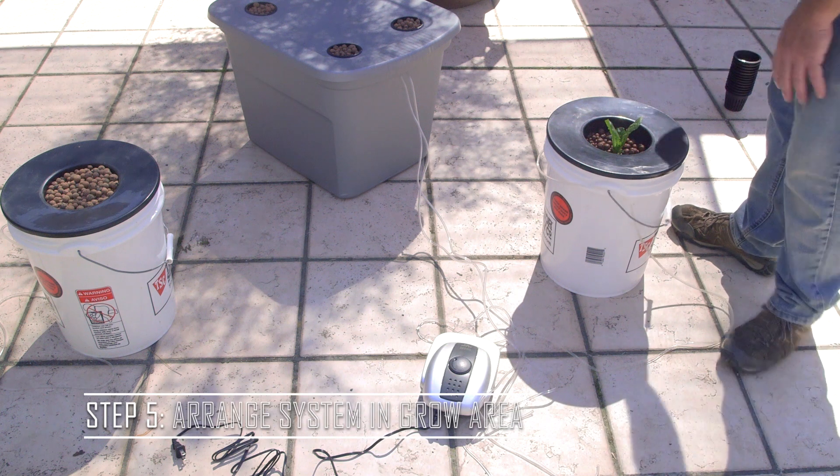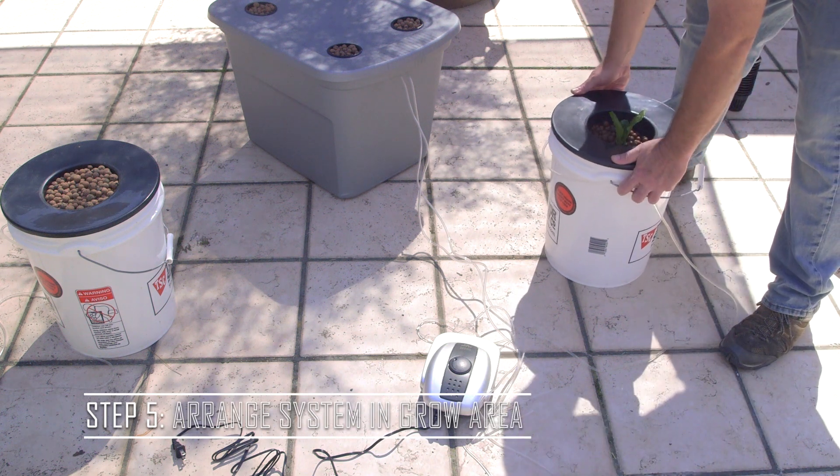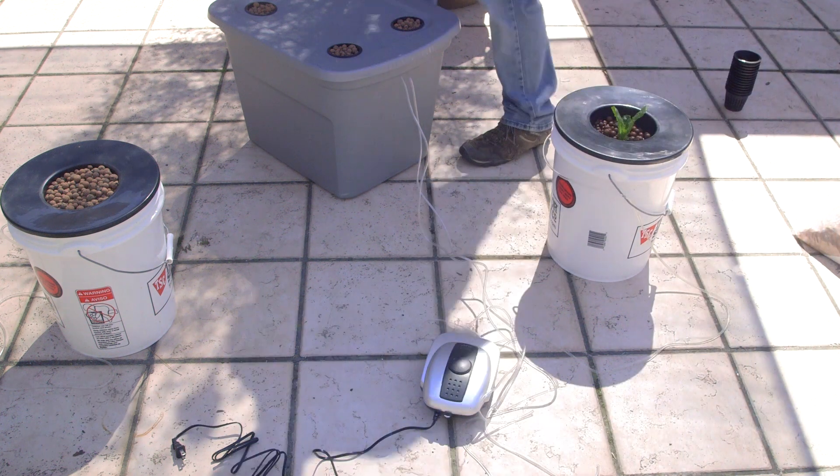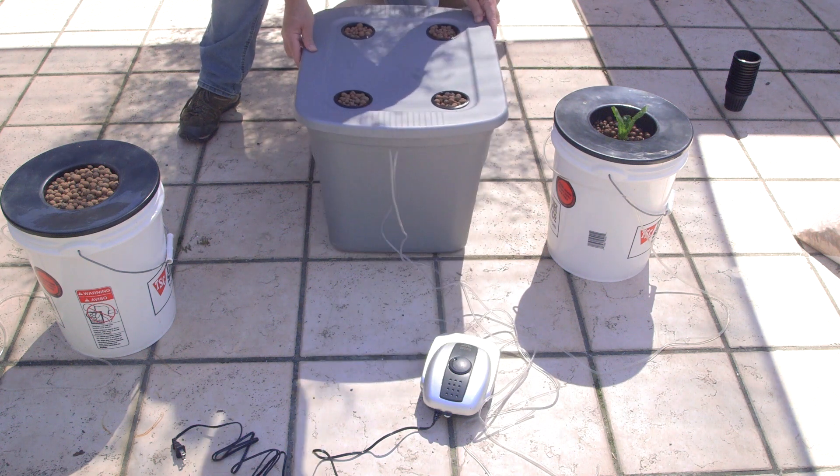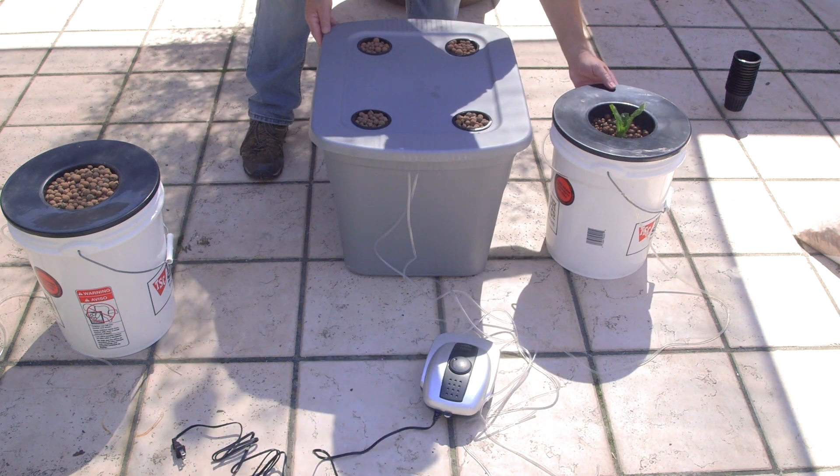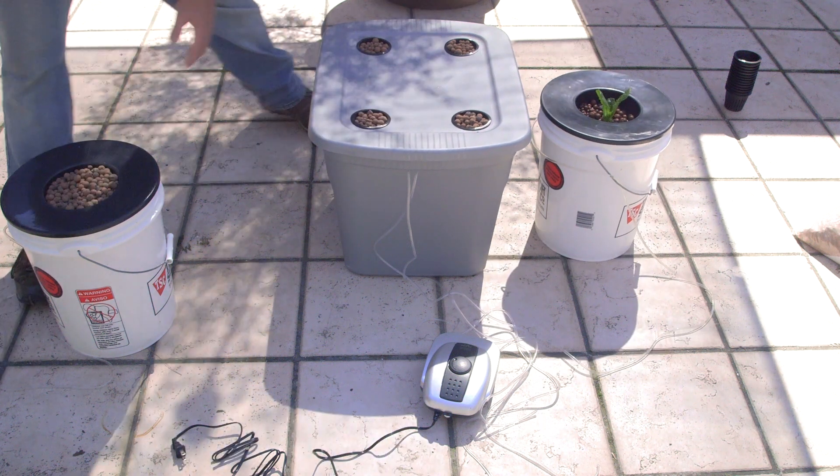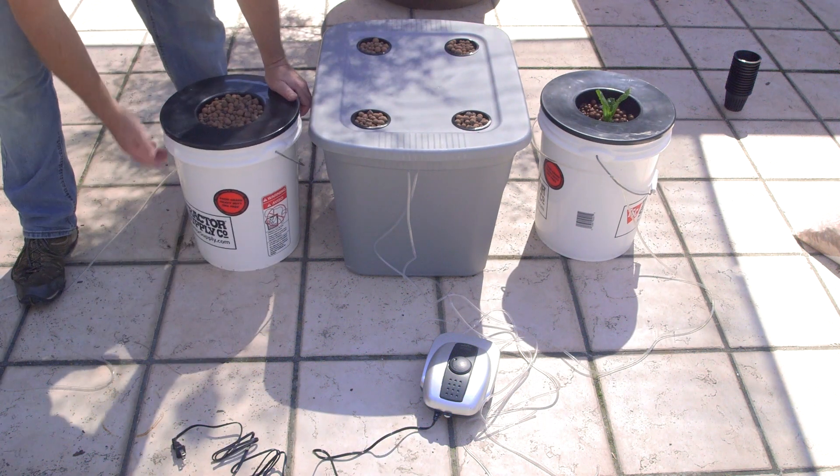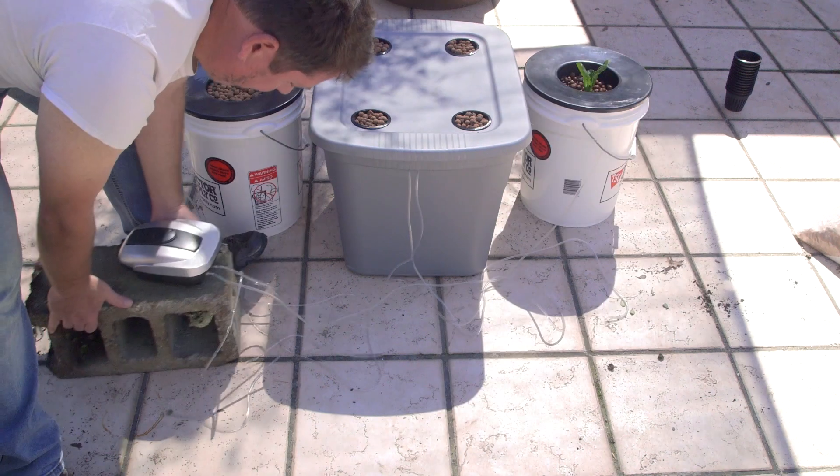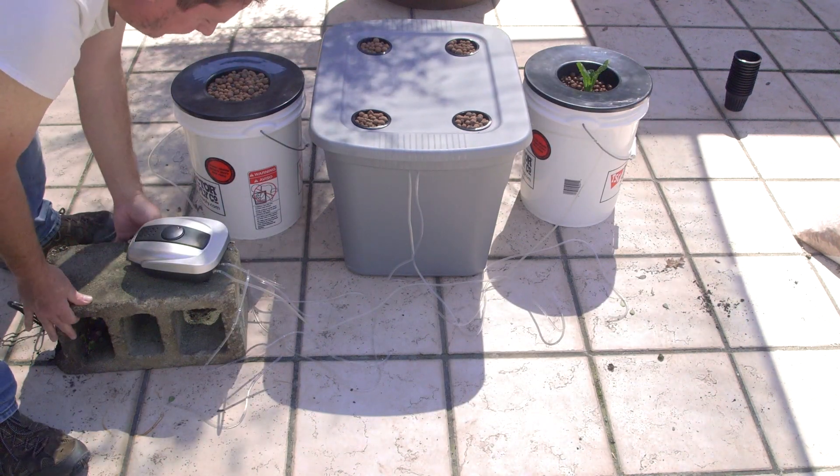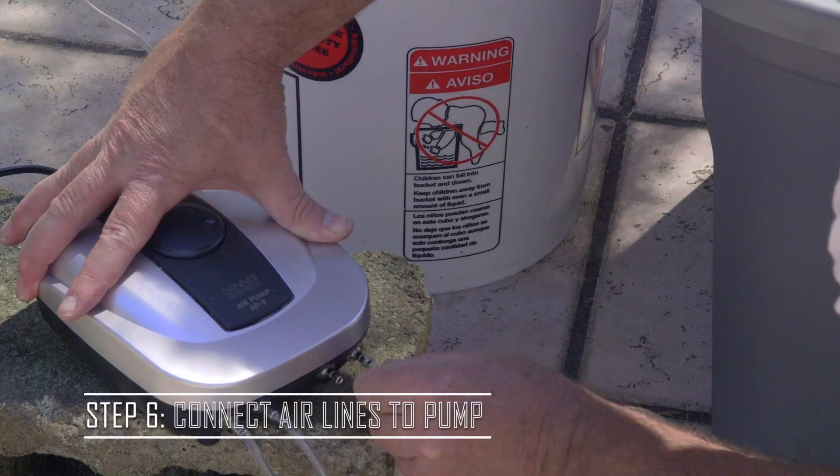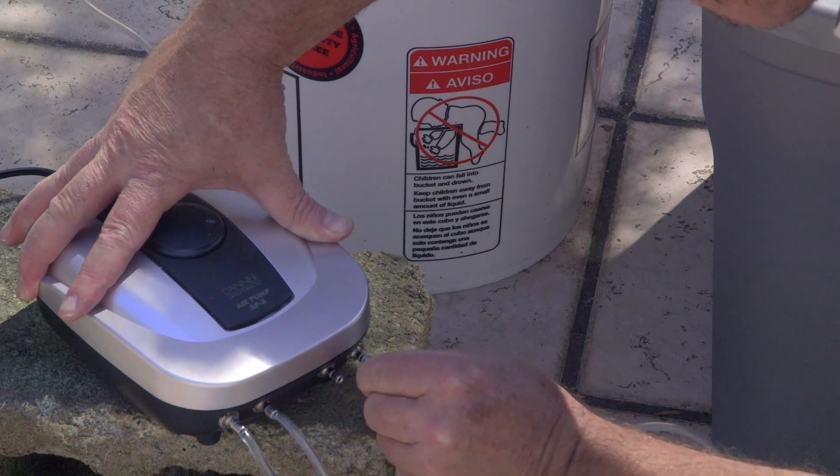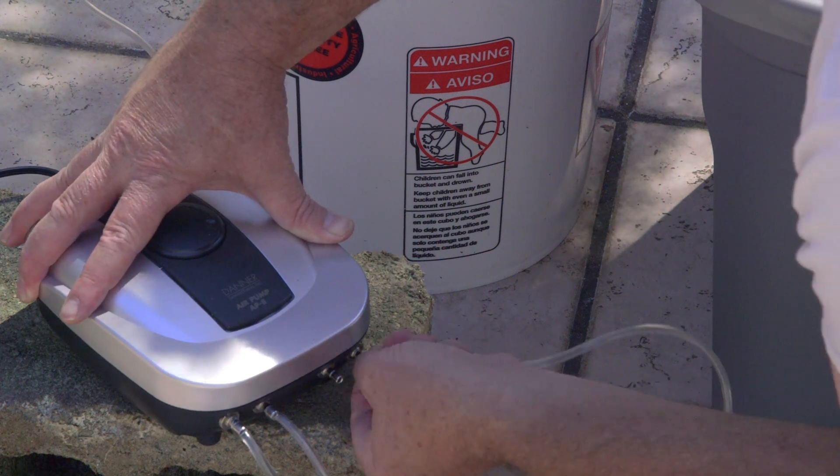So now we're going to test and fill our system. We have all the basic components ready, but now what we want to do before we fill it up with water is we want to put it in place because once they're full, it's going to be a lot harder to move them. So go ahead and arrange your system into place where you want it to be in your grow area. And when placing your system, you're also going to make sure that you have your pump well above the ground level. So that if anything happens and your water spills out, it won't hurt your pump.